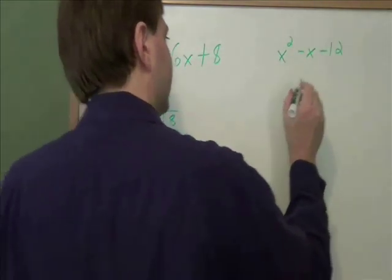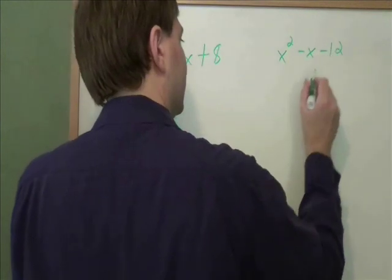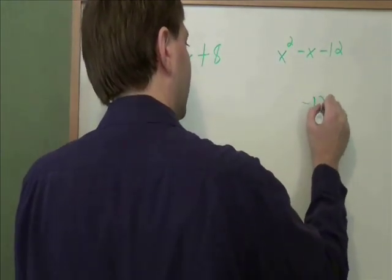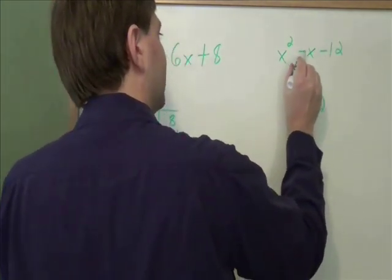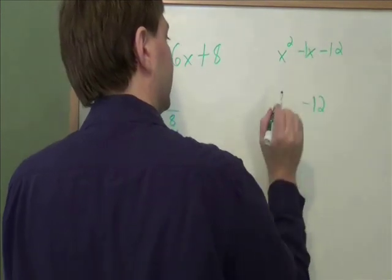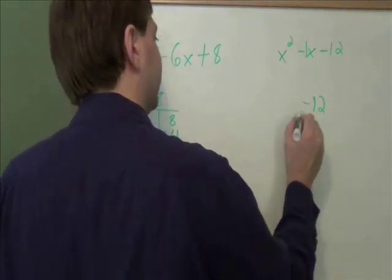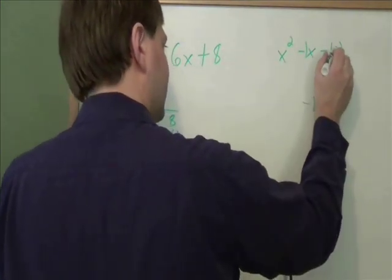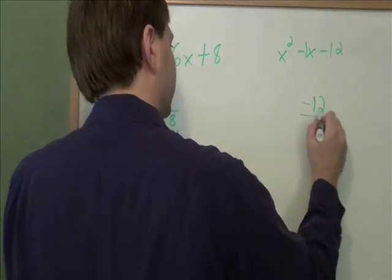Same idea for this problem here. We need two numbers that will multiply to be negative 12. And that will add up to be, if you've got negative x, that's the same as negative 1x. We need two numbers that add up to be negative 1. But I always start by looking at what's going to multiply to be negative 12.